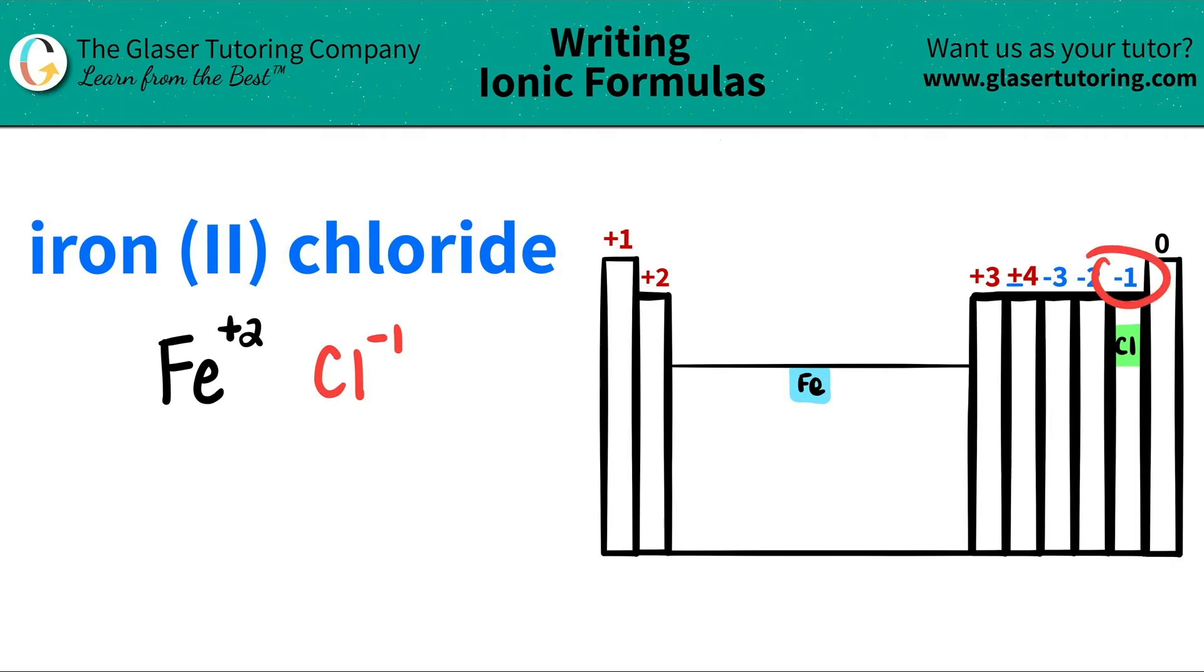Now since I have both components and I have the charges, we do this little trick where we crisscross the charges to just say how many of each element I need. So this +2 crisscrosses down, telling me that I need two chlorines, and this -1 crisscrosses down, telling me that I need one of the irons. When you do this crisscross, don't worry about the charges anymore. You're only going to be focusing on the subscripts, and don't worry about the positives and the negatives.